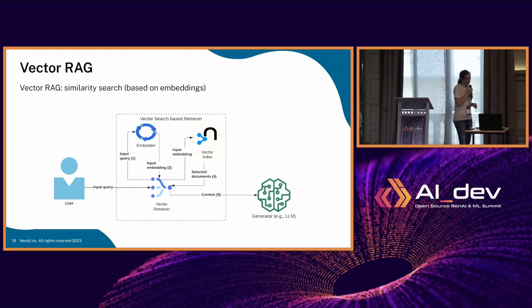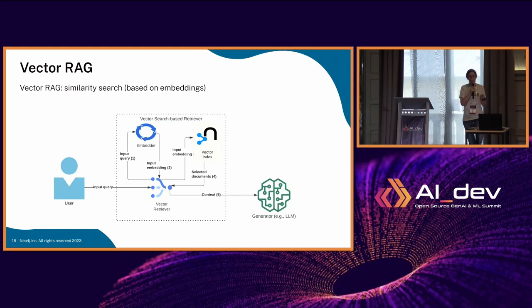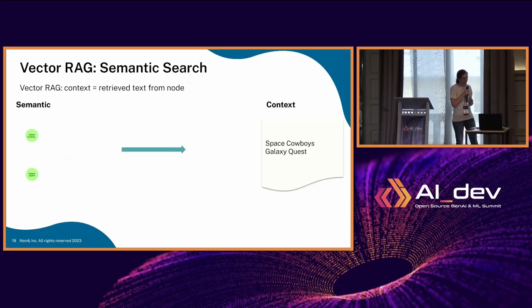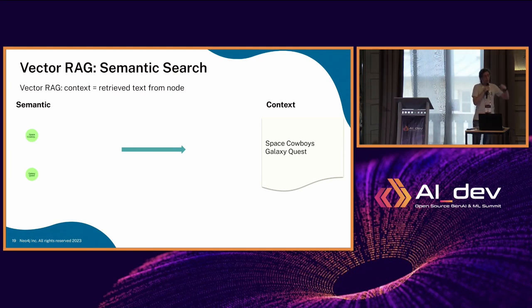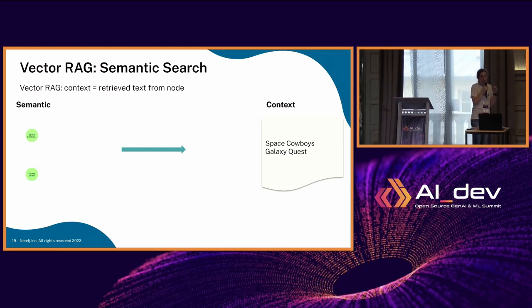Here's a simple vector RAG example with Neo4j. We have a vector retriever that embeds the user query and compares it to vectors stored in the Neo4j vector index. If the question is 'find the actors acting as astronauts in movies,' a pure vector search can only retrieve movies. So it won't be able to answer because you're asking for actors — that's where graph RAG can improve context retrieval.